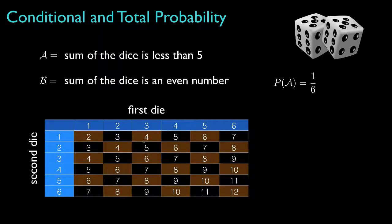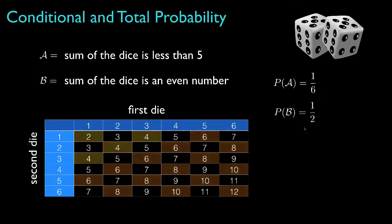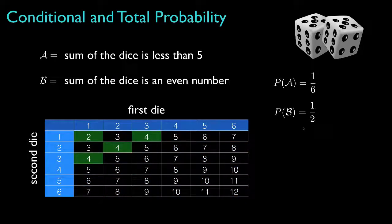18 of the 36 possible sums are even numbers. Therefore, the probability for event B — that the sum of the dice is an even number — is 18 divided by 36, or one half. Now four of the sums are both less than five and even, so the joint probability that both A and B occur is four out of 36, or one ninth.